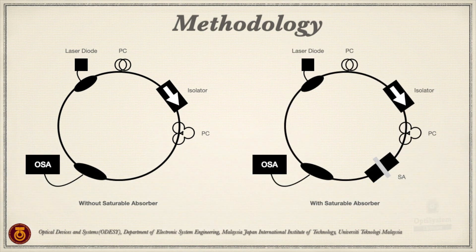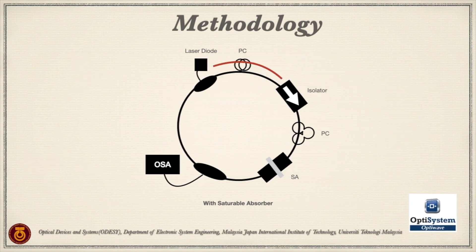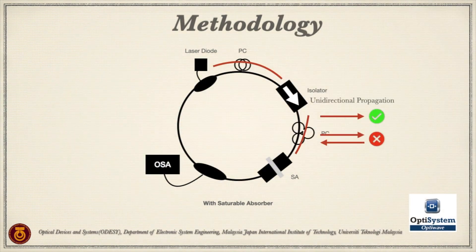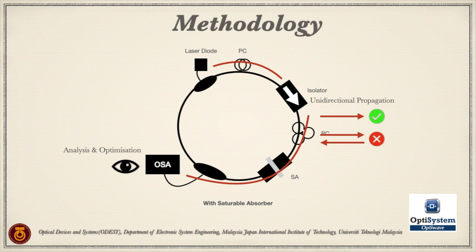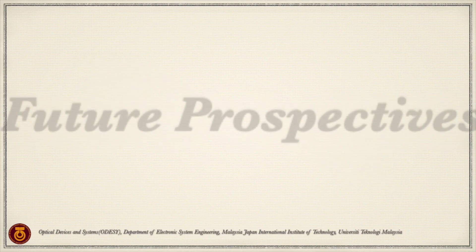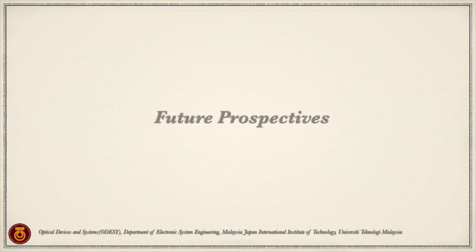The simulation of the passively Q-switched fiber laser with and without a saturable absorber will be done using a software named OptiSystem, by crossing the parallelized light beam through an isolator for unidirectional propagation. Analysis and optimisation of the parameters affecting the Q-factor and intra-cavity losses will be performed using an oscilloscope and an optical spectrum analyser. Through this simulation, a performance advancement of the Q-switch fiber laser can be inspected and its overall achievement improved.